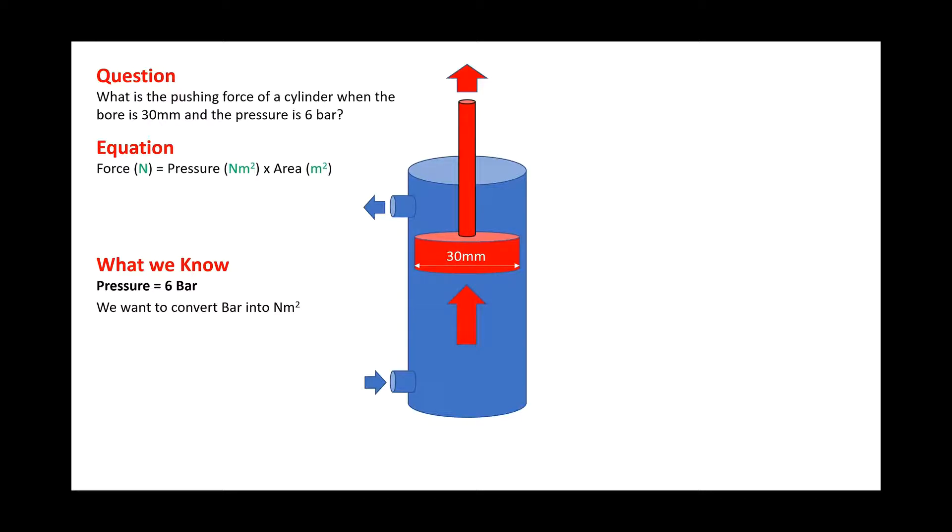To do this, we know that 1 bar equals 100,000 pascals and 1 pascal equals 1 newton meter squared. So 6 bar equals 600,000 pascals, and converting that into newton meters squared is 600,000 newton meters squared.